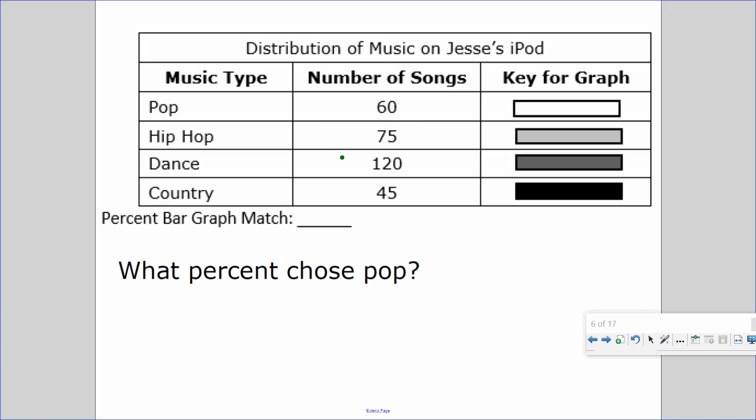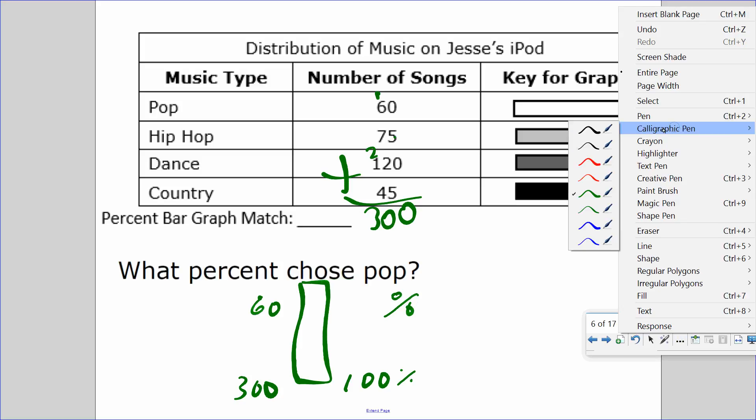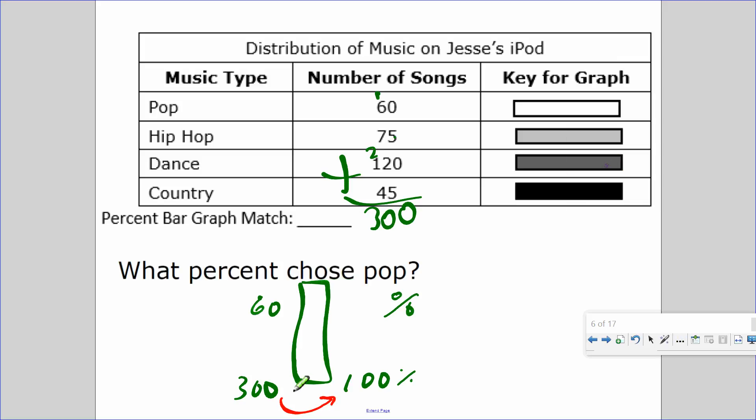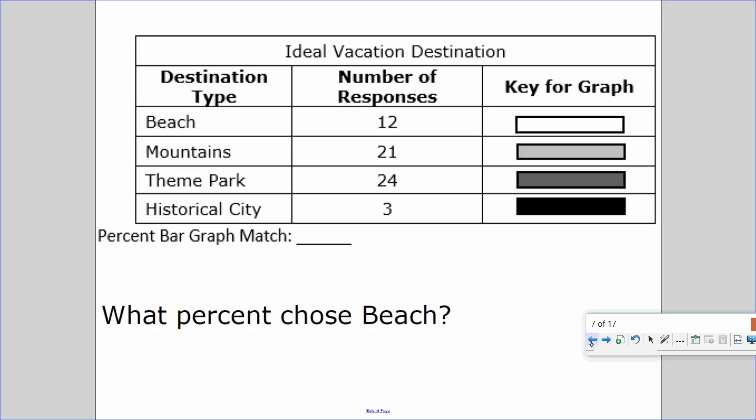Next one. Let's find the total number of people. 60 plus 75 plus 120 plus 45. So 300 people they asked in a survey about the distribution of music on Jesse's iPod. What percent chose pop? 60 out of 300. So let's draw a percent bar. There are 300 songs in all. 60 of them are pop. The percent bar goes up to 100%. So we know it's going to be a smaller percent, less than half. What is the relationship from 300 to 100? Hopefully you said it's divided by 3. So it's 20%.